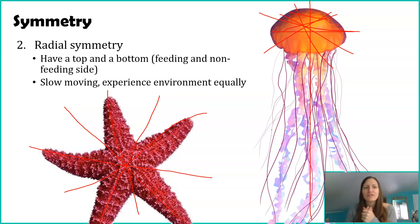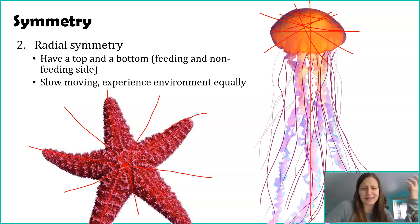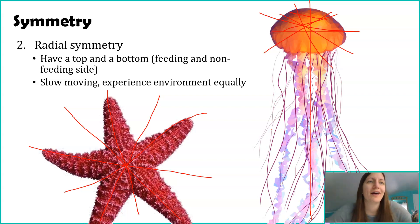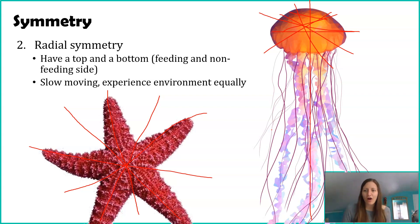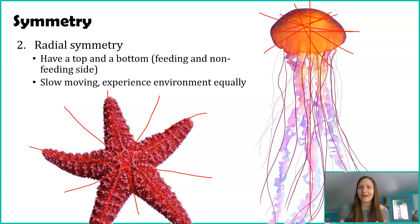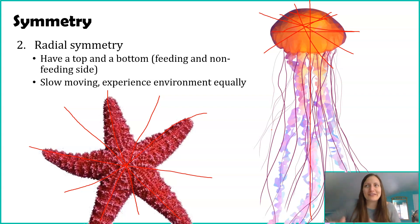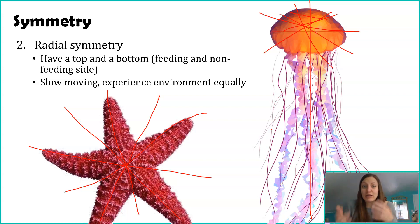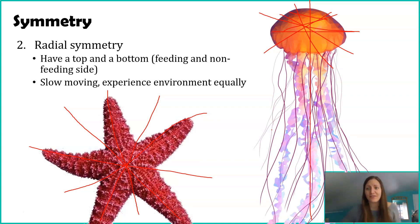The other thing about radially symmetrical organisms is, although they move slower and might seem more likely to get predated upon, they can sense predators from every direction. Their sensory organs are not all concentrated in one area — they're on every side, evenly throughout the entire body. There's no sneaking up on a starfish; there's no sneaking up on a jellyfish — it can sense everywhere equally. So it's this idea of trade-offs: yes, they move slower, but they're able to sense everywhere around them.